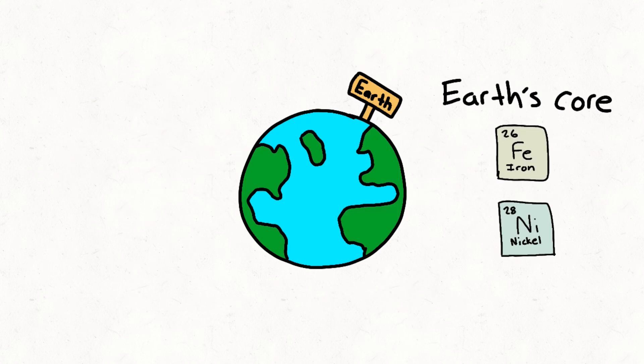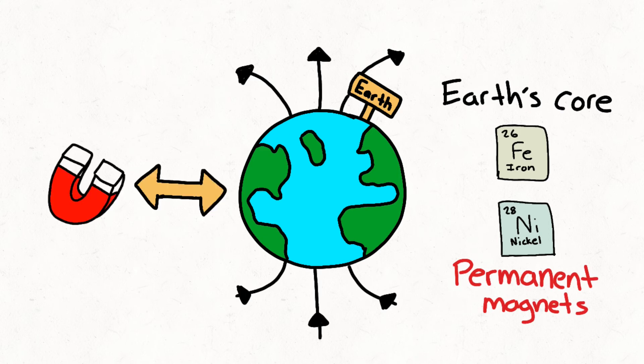Considering that the Earth's core is primarily composed of iron and nickel, and that most permanent magnets are also made out of metals like iron and nickel, the Earth is technically one giant magnet with magnetic field lines moving from the north to south pole.